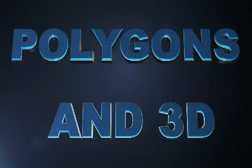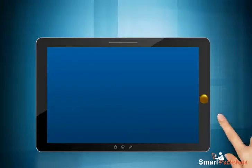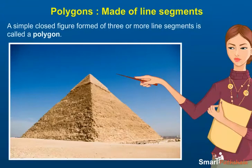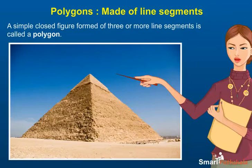Polygons and 3D. This module will describe the method of polygons and 3D. A simple closed figure formed of three or more line segments is called a polygon.